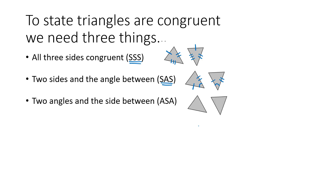A third trick is if we have two angles and the side between them. If we know one angle is congruent to another angle, a second angle is congruent to a second angle, and the side between those angles is also congruent, then the rest of the triangle must automatically be congruent. Because the side is between the two angles, we call this angle-side-angle, or ASA.